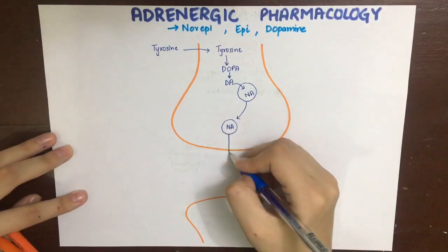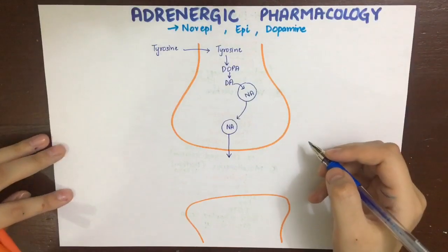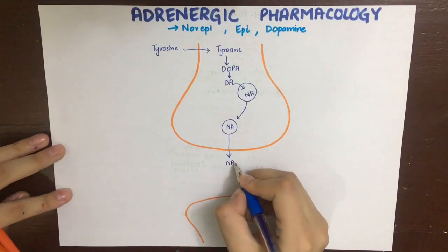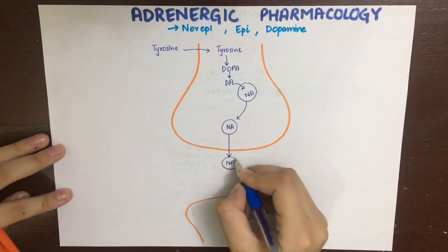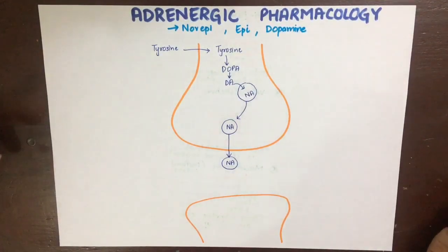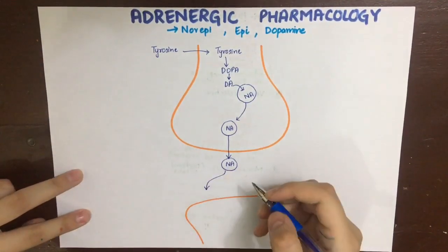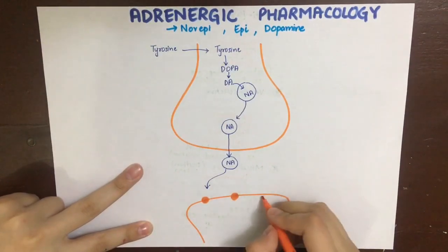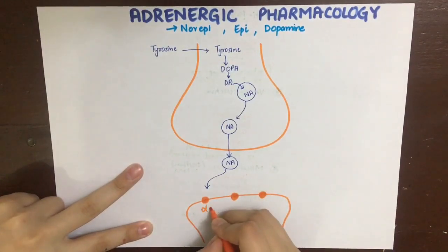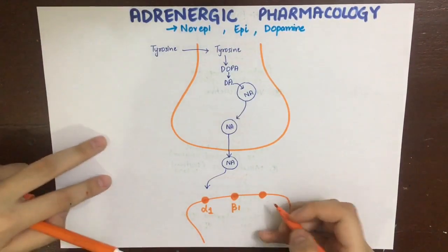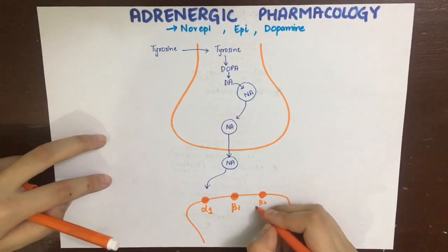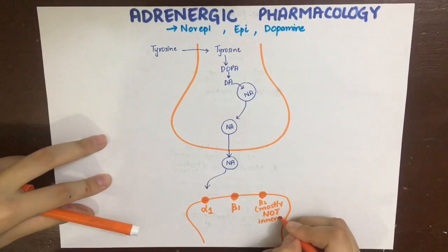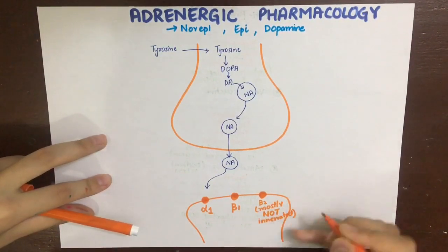When an action potential reaches the nerve terminal, norepinephrine is released into the synaptic cleft. After being released, norepinephrine acts on different receptors: alpha-1, alpha-2 presynaptically, and beta-1 — but not beta-2, because beta-2 receptors are generally not innervated.